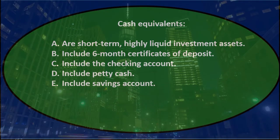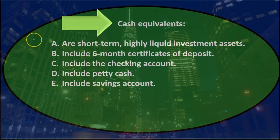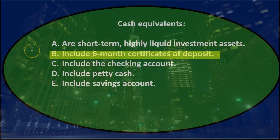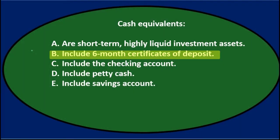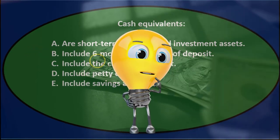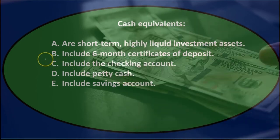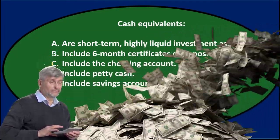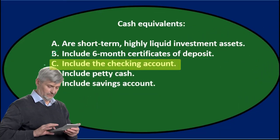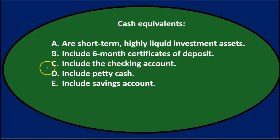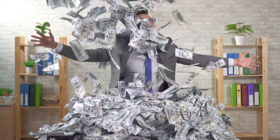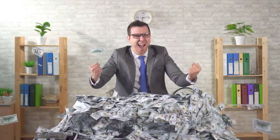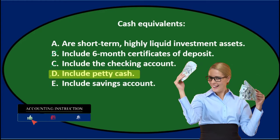Using the process of elimination: A. short-term, highly liquid investment assets — that sounds pretty good. B. Six-month certificates of deposit — cash equivalents have to be really liquid, really close to cash. A six-month certificate is probably not short enough; it'd have to be less than about three months to be considered a cash equivalent. C. The checking account — that's basically cash, not a cash equivalent, which would be some type of very liquid investment but not cash itself. D. Petty cash — also cash, not a cash equivalent. They could be grouped together on the balance sheet as cash and cash equivalents, but petty cash is cash, not a cash equivalent.